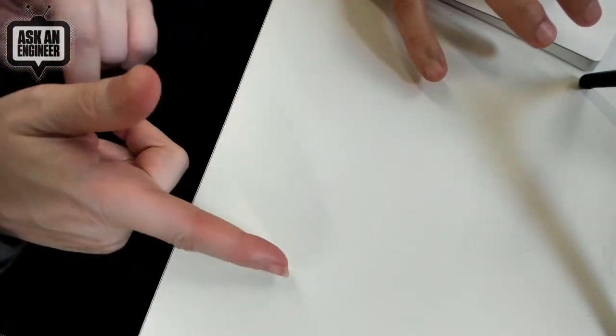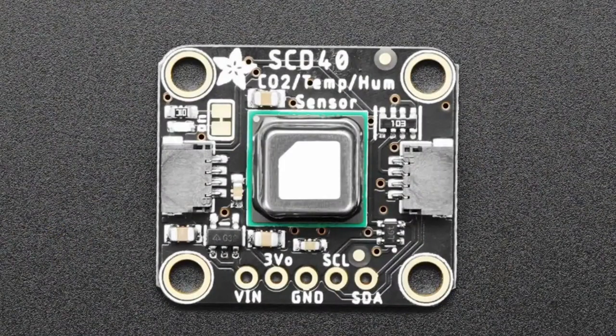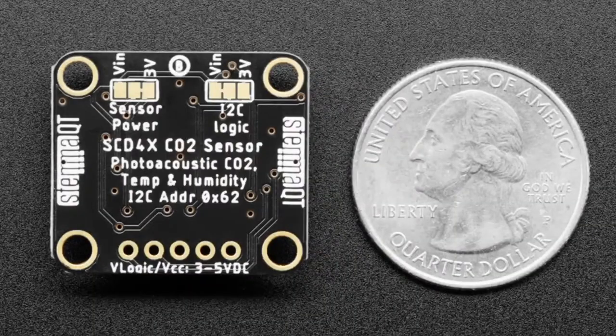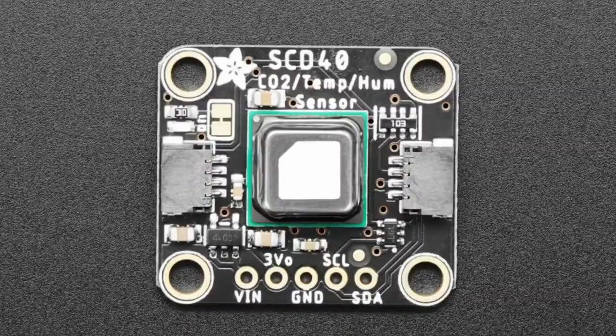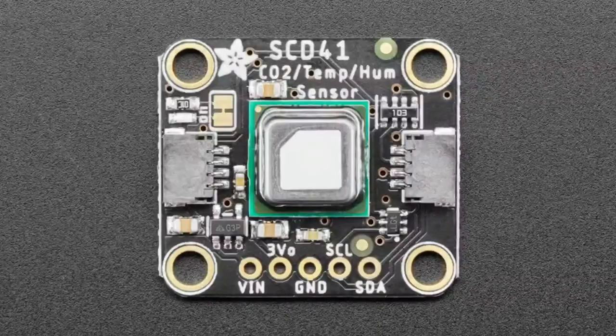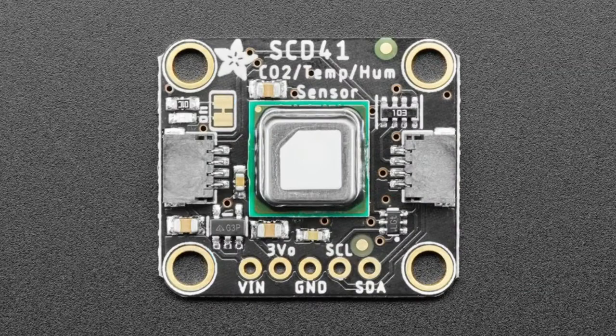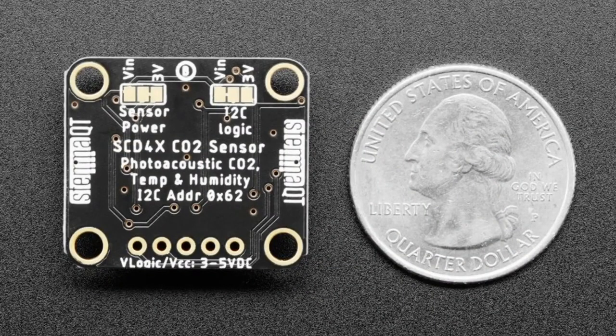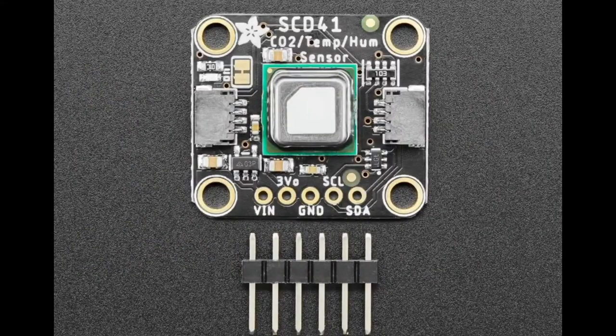The star of the show tonight is the SCD 40 and 41. Everything comes in pairs today so this is a two for one. Let's just go through and show all the pictures. There's the SCD 40 and then there's the SCD 41 and they look identical except that one has 41 on the top and one has 40 on the top. Why have both? Well they're two sensors of the same family and they're slightly different quality and so they're slightly different prices. Both of them are CO2 temperature and humidity sensors.